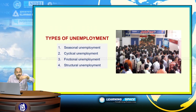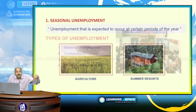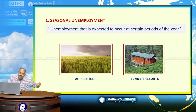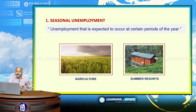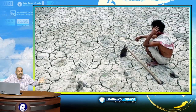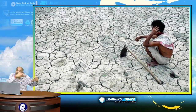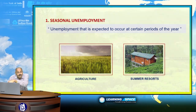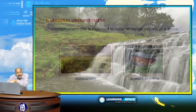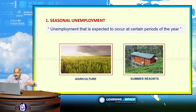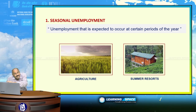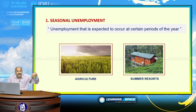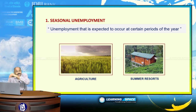There are different types of unemployment. The first is seasonal unemployment — unemployment expected to occur at certain periods of the year. In agriculture, during summer season there is no work for the labour force; they remain idle. Similarly, at summer resorts like Ooty, Kodaikanal, and Shimla, the labour force is idle during winter months because tourists flock in during summer. This is seasonal unemployment.